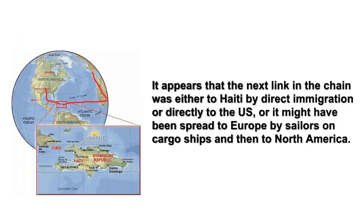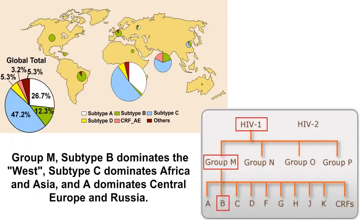It appears that the next link in the chain was either to Haiti by direct immigration, or directly to the U.S., or it might have been spread to Europe by sailors on cargo ships and then to North America. The data is a bit spotty, but the emergence in the major cities of Europe was slightly after the disease was documented in New York and San Francisco. Asia and Russia may have been infected by a second wave of emergence, as their subtype profiles are markedly different than the European and North American subtypes. South America, Australia, and Northwest Asia are a possible third wave emergence.